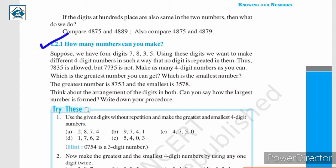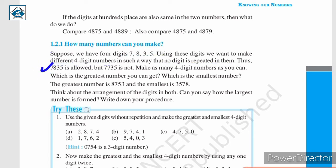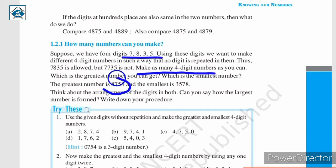Let us now discuss the next topic: How many numbers can you make? Suppose we have 4 digits — 7, 8, 3 and 5. Using these digits, we want to make different 4-digit numbers such that no digit is repeated. Thus, 7,835 is allowed, but 7,735 is not allowed because here the number 7 is repeated. So, we should not repeat any digit. Using these 4 digits, one example is given: the greatest number possible is 8,753. What they did was arrange these digits in descending order. The greatest digit here is 8, so we write it first. After that, the second greatest digit is 7, which will be written next.